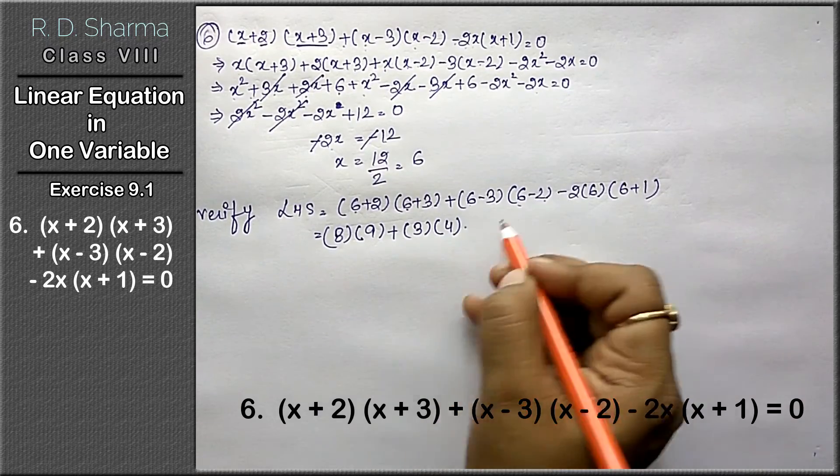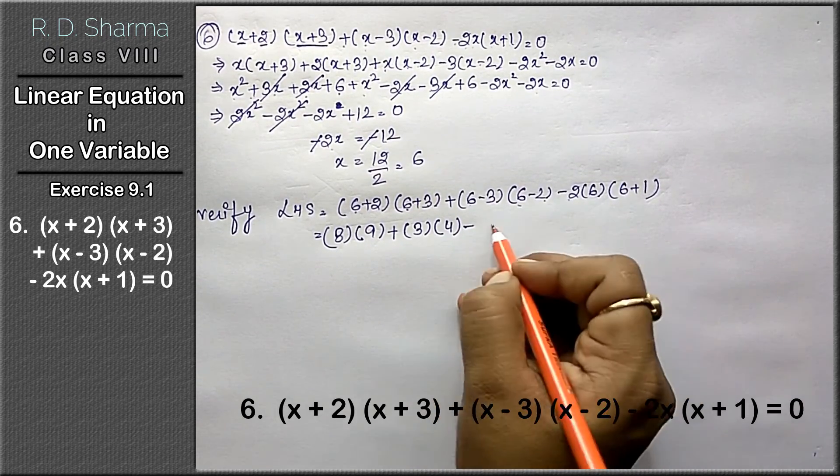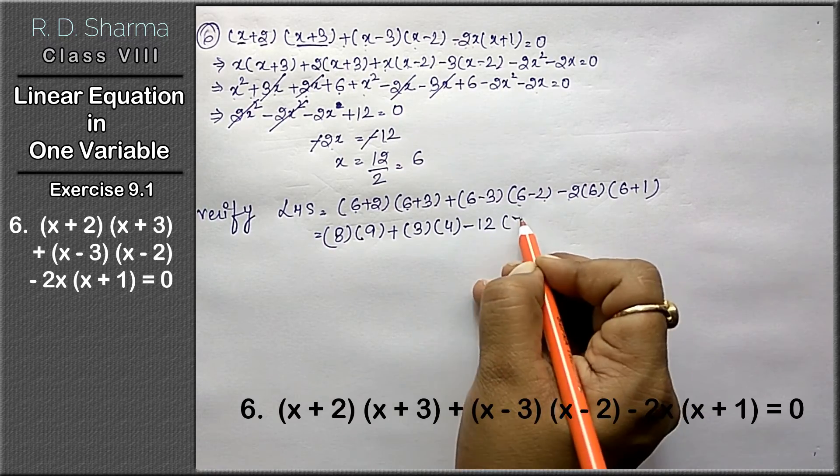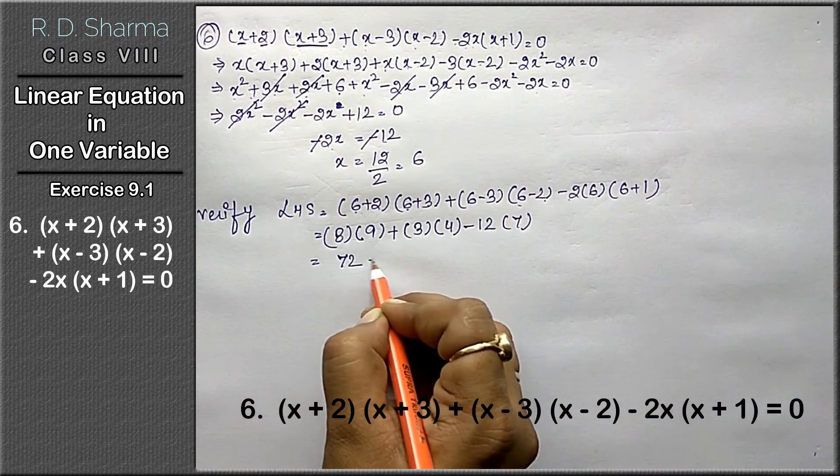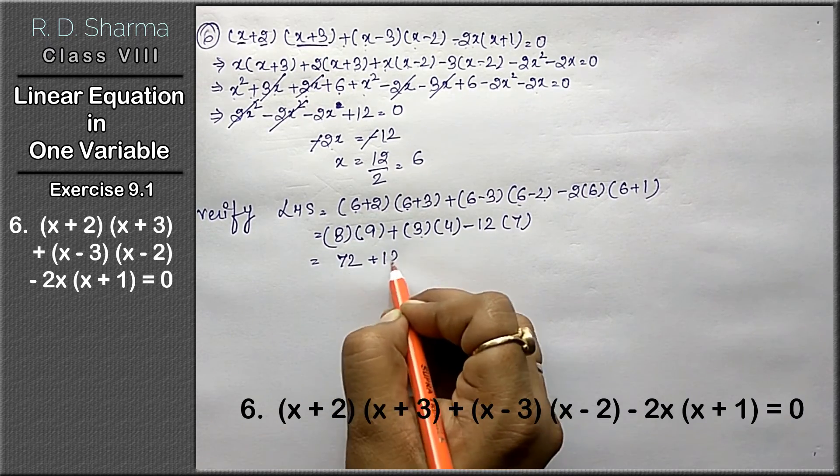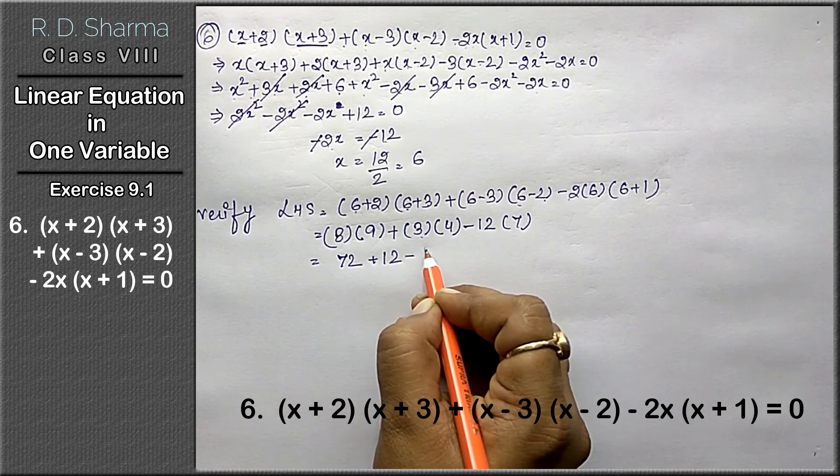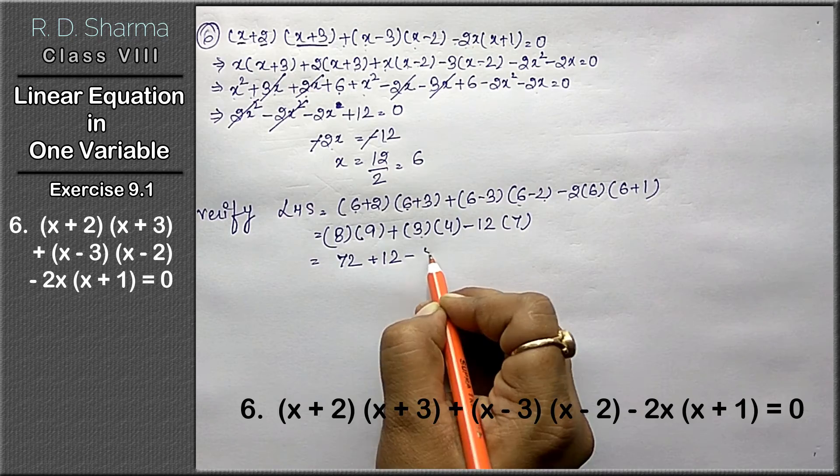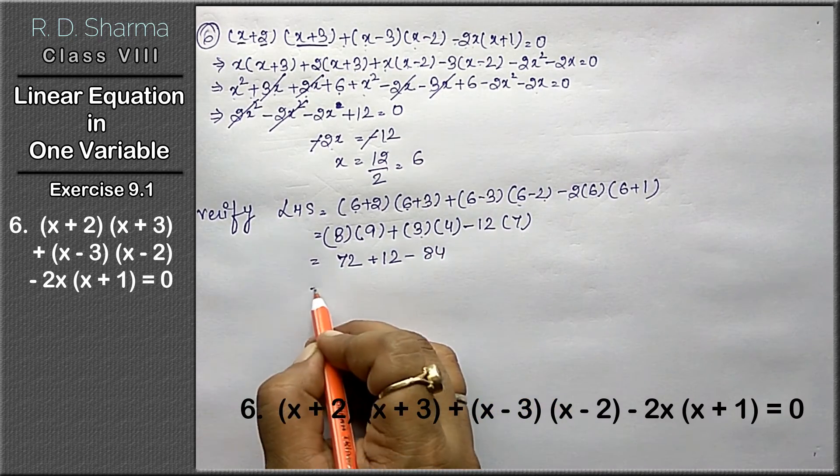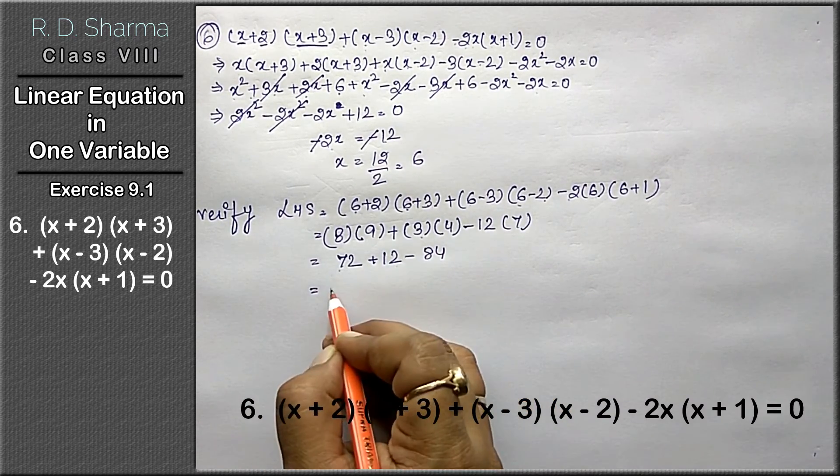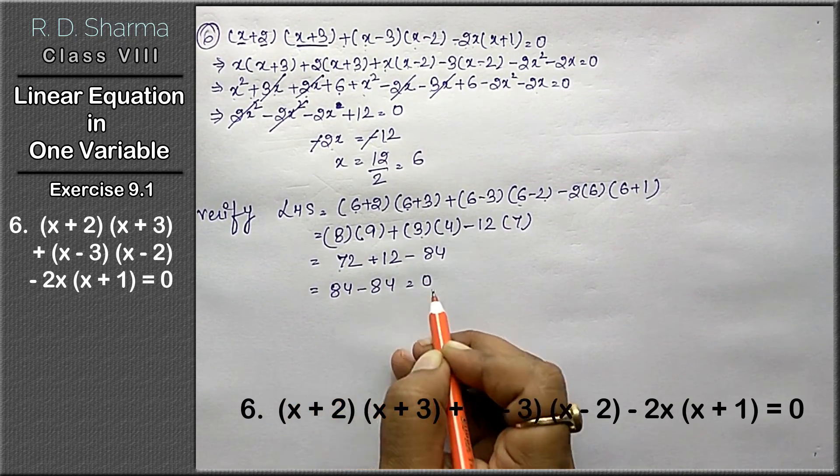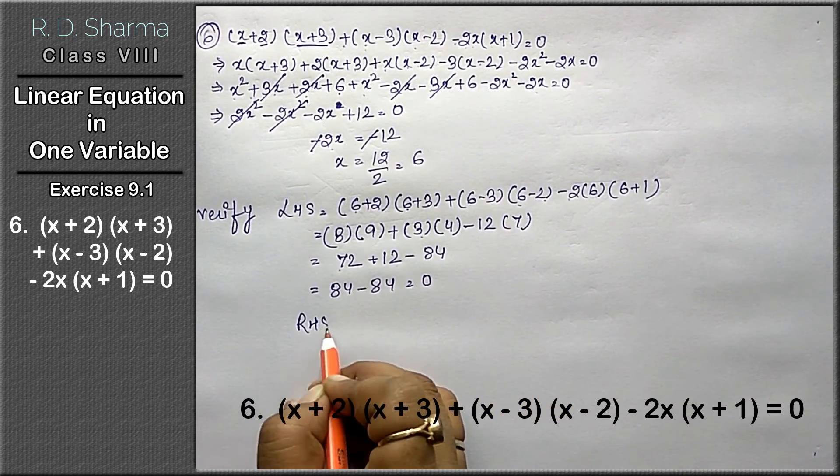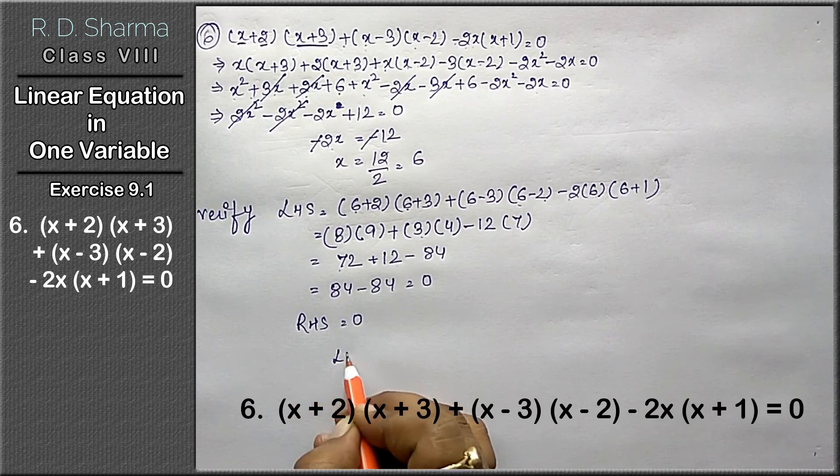8 times 9 is 72, plus 3 times 4 is 12, minus 12 times 7 is 84. 72 plus 12 is 84 minus 84, it is equal to 0. The right side is already 0, that means left side equals right side.